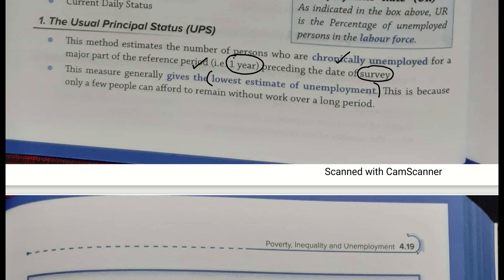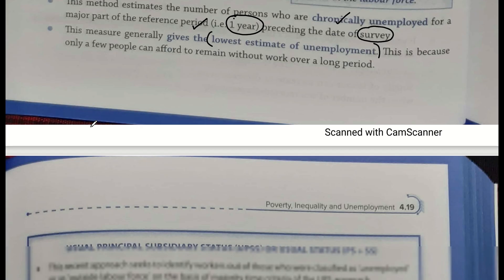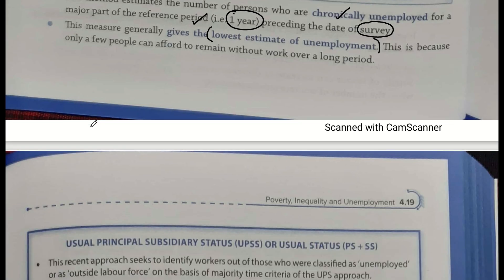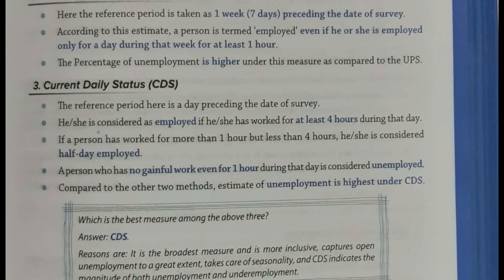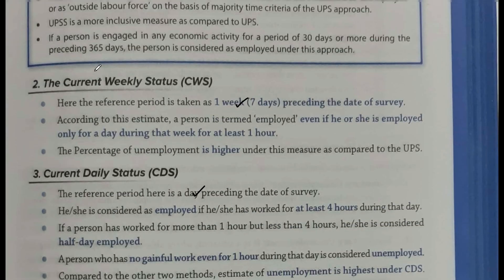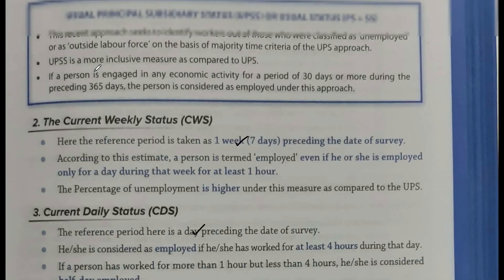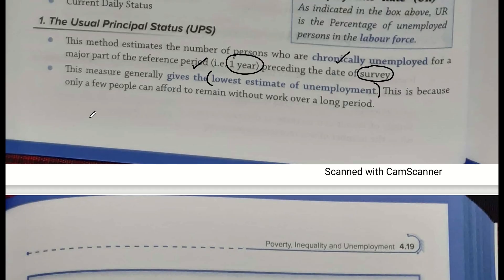Dhyan se samajhna is baat ko. Ismein UPS method ke according aankde kyun de rakhe hote hain jo hum yeh jo abhi survey dekh rahe hain — employment-unemployment survey jo ki har 5 saal mein ek baar conduct hota hai? Kyunki baaki saaron ke agar aap time frame dekhoge, toh yeh ek din aur kuch ghanton wala bhi hai — CDS. Lekin CDS aur CWS ke comparison mein, yeh jo UPS hai, Usual Principal Status hai, yeh preceding one year ko dekhta hai. Is se zyada bada reference period toh maana nahi jaata.